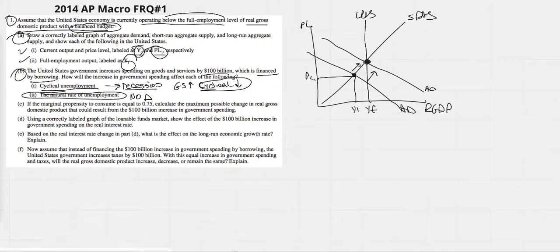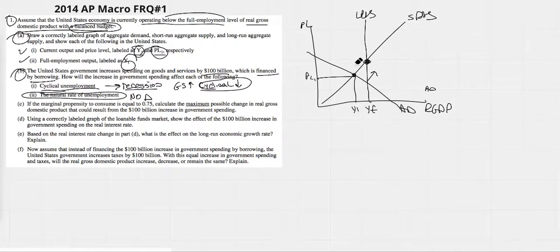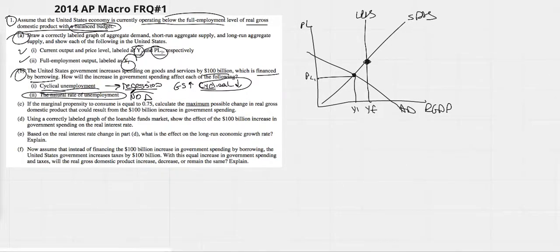These are not affected by government spending or aggregate demand increasing. So your natural rate is not going to change at all. It will stay the same. Cyclical, though, on the other hand, will disappear. No change here, cyclical goes down here.